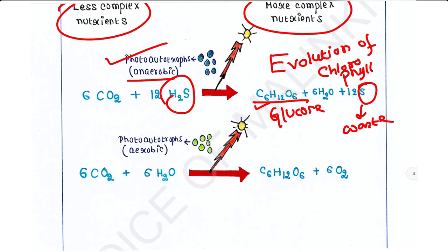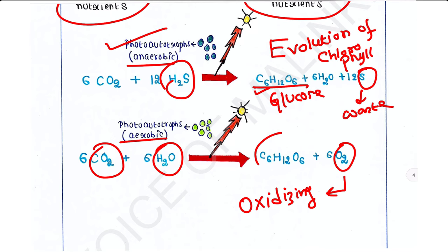The first aerobic photoautotrophs used water as hydrogen source and CO2 as carbon source. They released free oxygen in atmosphere that changed the atmosphere from reducing to oxidizing. Free oxygen in the atmosphere finally led to the evolution of aerobic mode of respiration, which yielded more energy on breakdown of glucose.